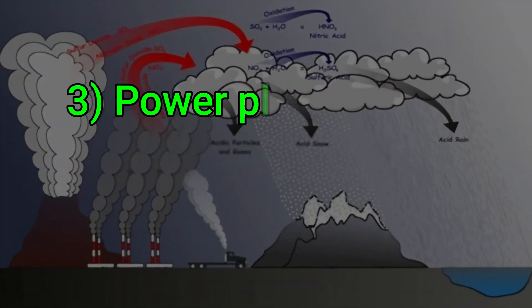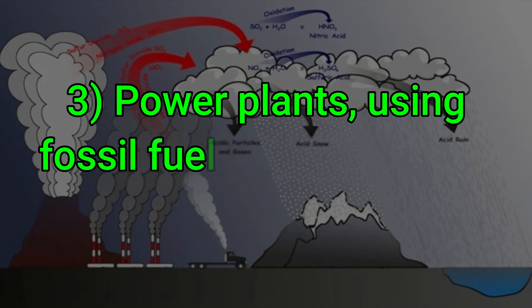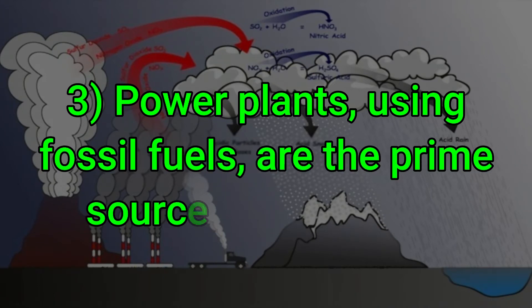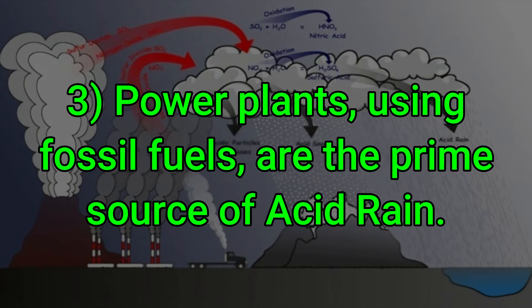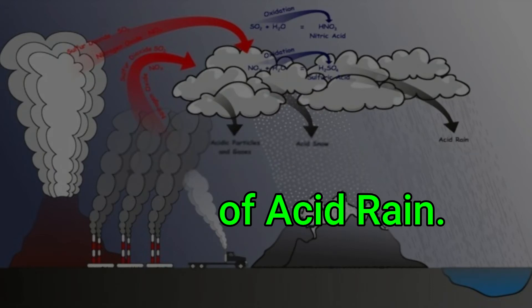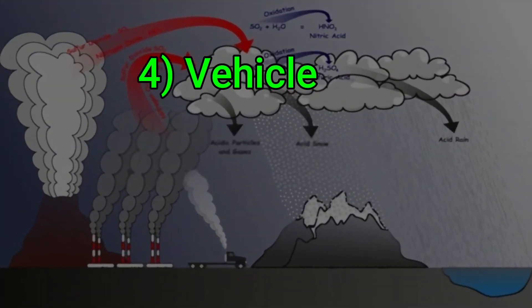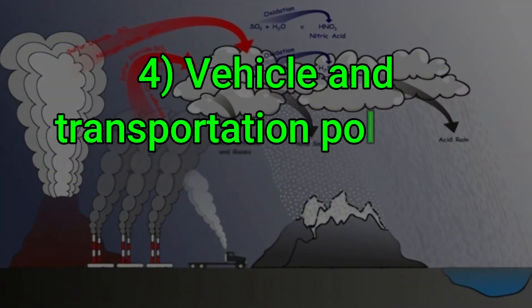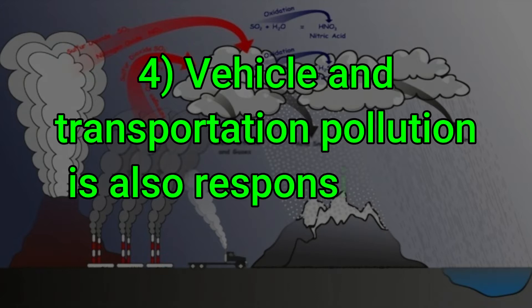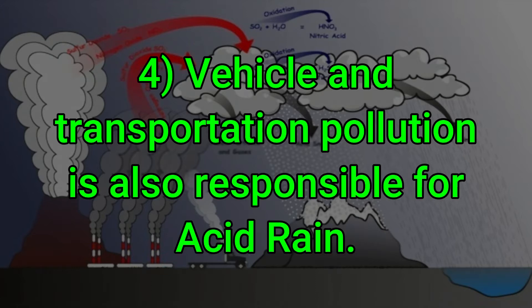Power plants using fossil fuels are the prime source of acid rain. Vehicle and transportation pollution is also responsible for acid rain.